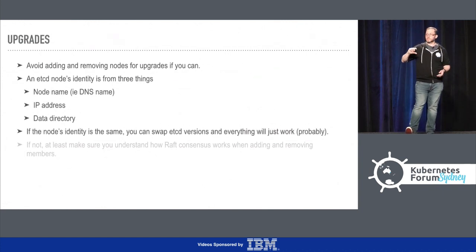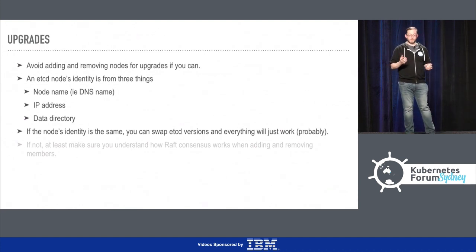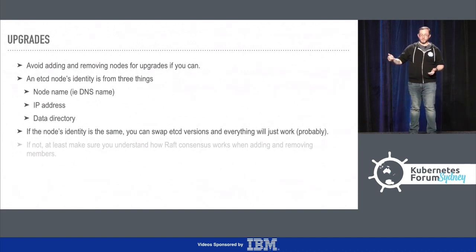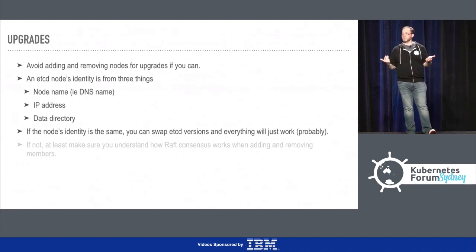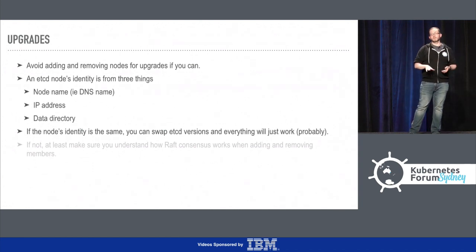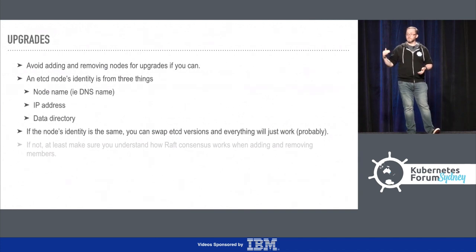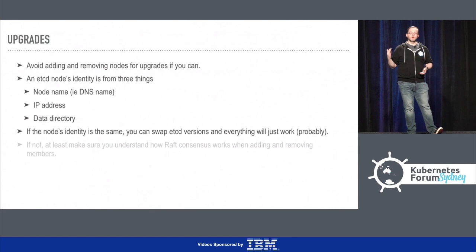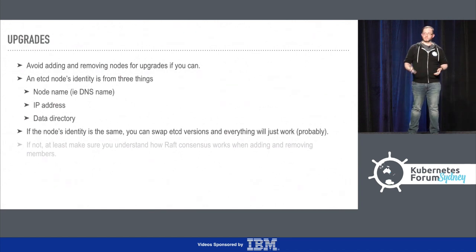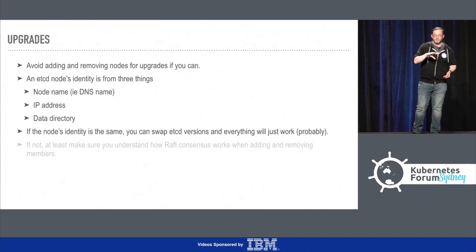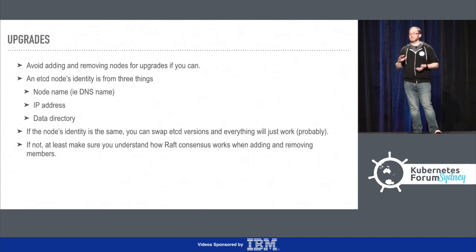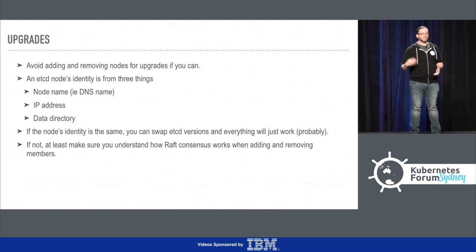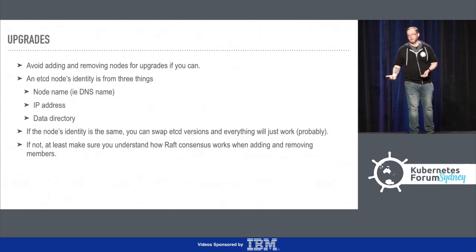So what you can do is shut down a machine - in our case, we would throw away the entire OS partition - and then start up a new machine with the same name, the same IP address, a different OS and different etcd version, but the same data directory. Because those three things were the same, as far as etcd was concerned, this is the same member, it just happens to be running a new version now. Another really nice thing about etcd is that once you hit all the nodes in your cluster running the new version, the cluster will self-upgrade - it runs at the lowest possible version amongst all of the members. So if you must add and remove nodes, you really need to understand exactly how the quorum works, the failure cases, and have pretty good processes for doing this quickly and reliably.